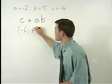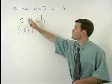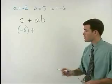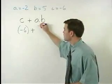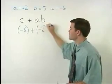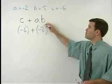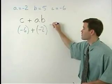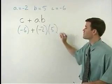We have plus A, which is negative 2. So we're going to replace this A with a negative 2 in parentheses. B is 5, so we replace the B with a 5 in parentheses.